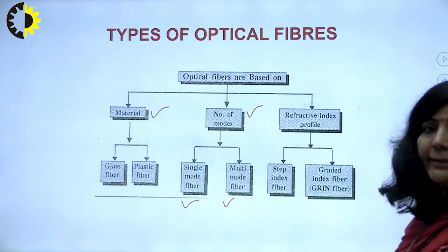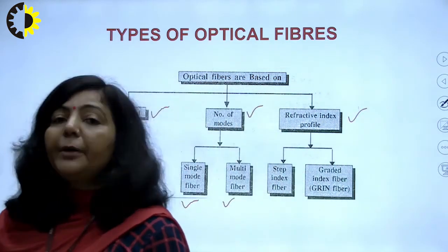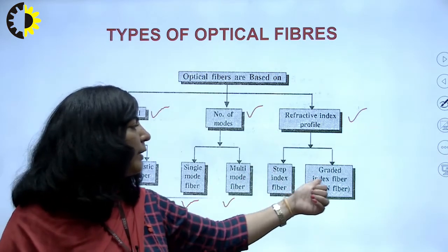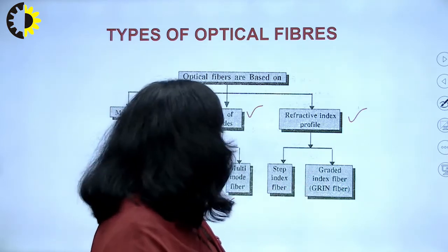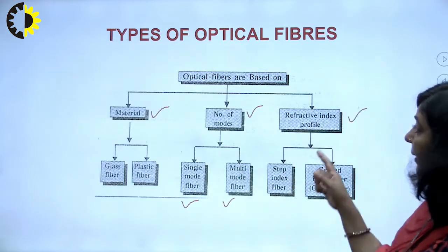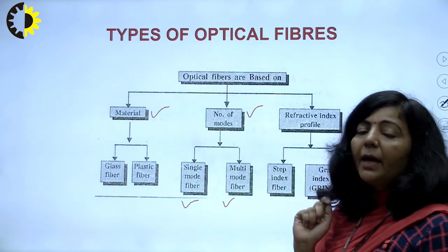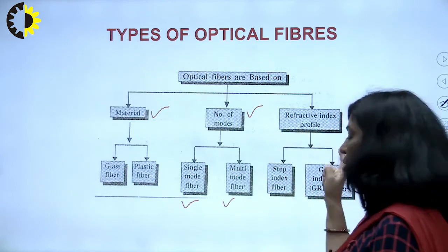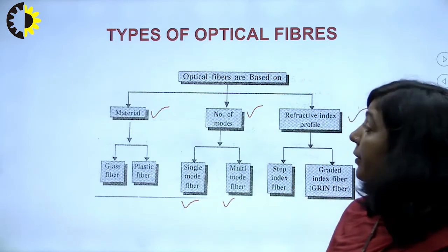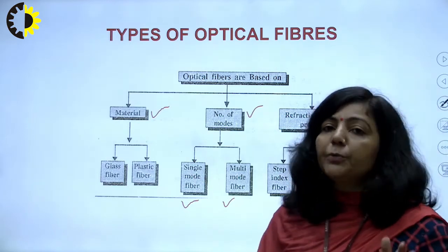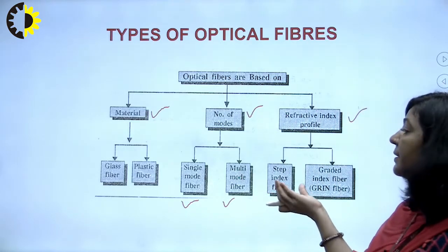The third criteria on the basis of which you can classify optical fibers is the refractive index of core and cladding. You can classify optical fibers either as step index fibers or graded index fibers. This classification based upon refractive index is the most popular and most important criteria, and we will use this classification — step index and graded index — here.